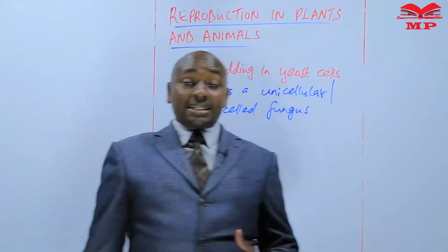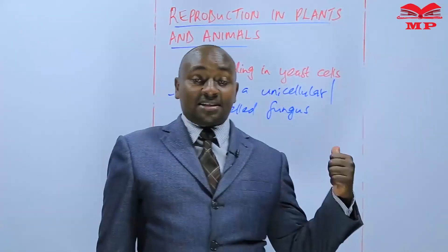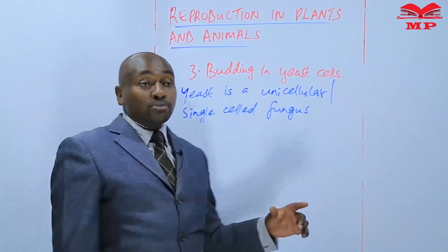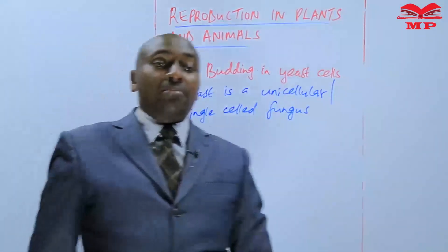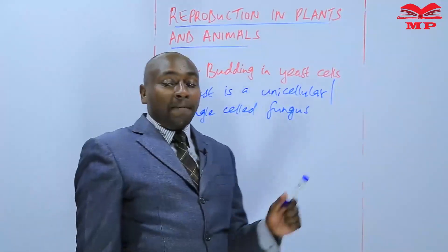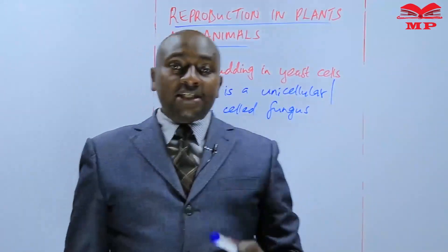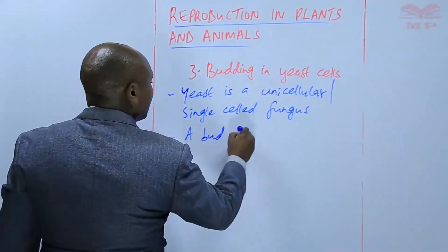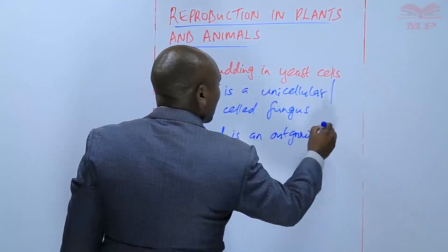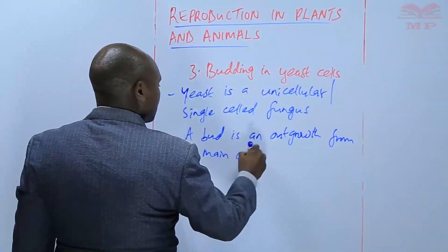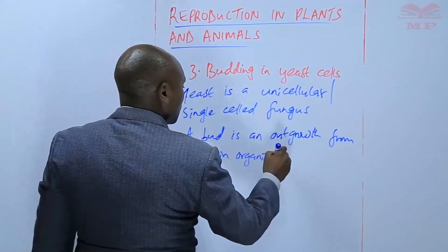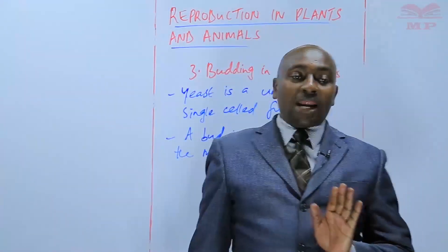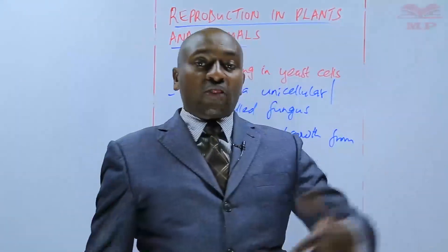But unlike the others, yeast does not reproduce by sporulation. Instead, it reproduces by budding. A bud is an outgrowth from the main organism. What happens is that yeast forms an outgrowth, what is called a bud, and then that outgrowth later develops.